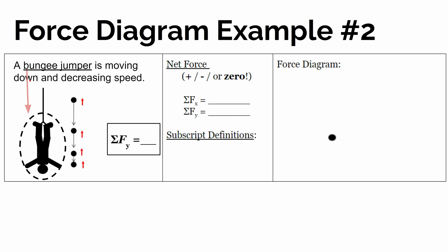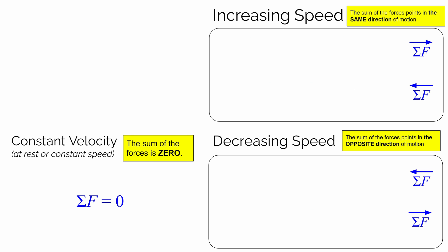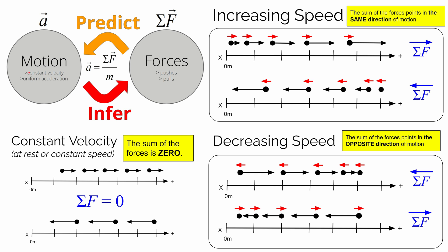And then we need to look at how the bungee jumper is moving. So as they're moving down — in the negative y direction — they're decreasing speed or slowing down. So let's go back to what we know about the relationship between the motion of an object and the forces that it feels.